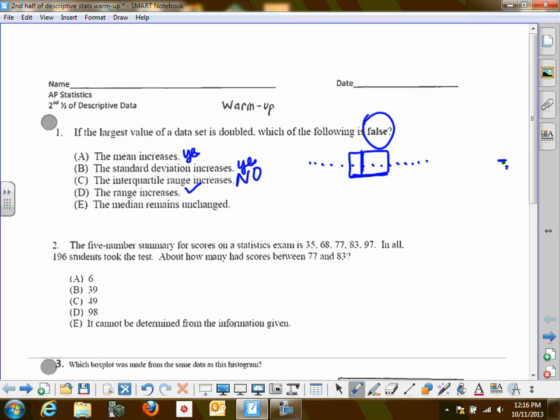So let's double check the others. The range increases? Yes, of course, it's much farther away. And then how about the median? Will this be affected? It will not. It will remain unchanged. So those are all true statements. The one that's false is C.